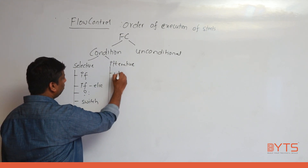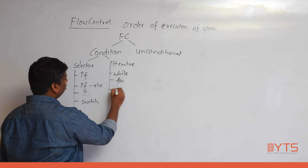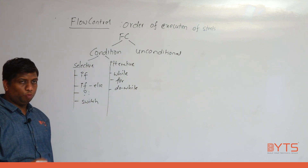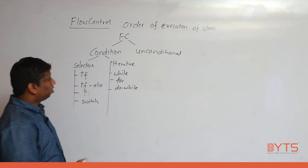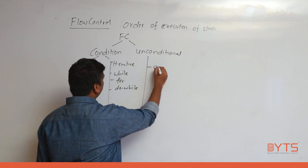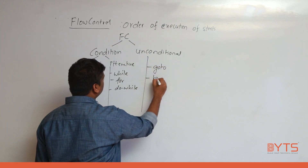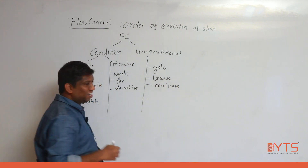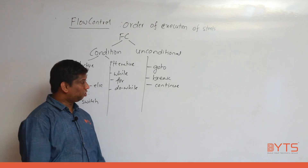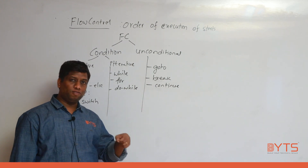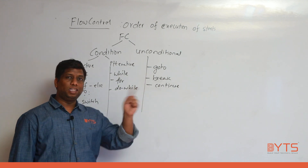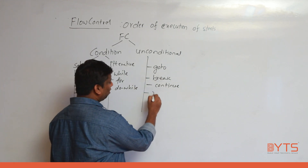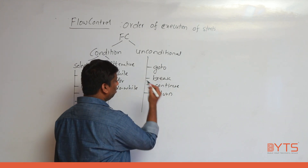In iteration, we have while, for, and do-while. Whenever we reach the end of the loop, we need to come back to the starting of the loop — that is the meaning of iteration. For unconditional, we have goto, break, and continue. Continue means skip the current iteration and continue the next. Break means come out of the loop or switch. Goto means take the control from one place to another place within the same function.